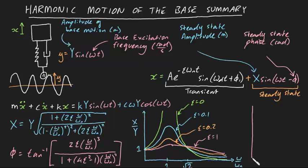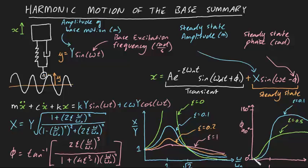Phi plotted against omega over omega n will look like this when zeta equals 0.1, 0.5, and 1.